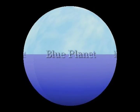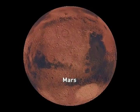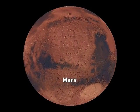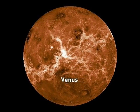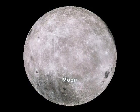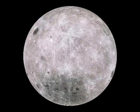Water defines our world, from shaping the surface of the planet to supporting all life on Earth. Water in abundance makes Earth remarkably different from its neighbors in the solar system. Mars is a frozen desert. Venus is hot and dry. The Moon is both cold and hot, and waterless.